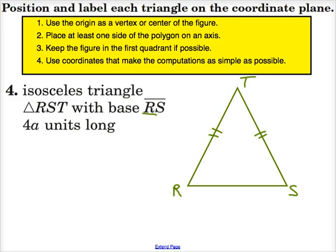Now let's follow these instructions. Use the origin as a vertex or center line of the figure. Isosceles triangles have center lines right down the middle, so we can use that as one of the axes. If I've got my y-axis like this, I'd want to position it over the vertex of that isosceles triangle.